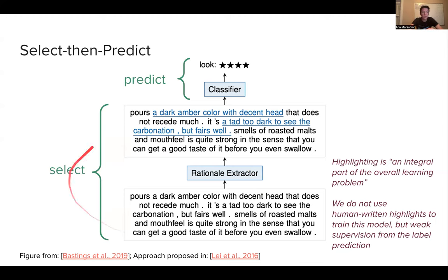So this is different from post hoc highlighting because this rationale extractor here, we are using rationale because that's the terminology which was used in this select and predict papers. But remember I told you it's better to use highlighting. So we could also call this highlight extractor. So highlight extractor is integral part of the whole model. And we are going to train the model to do this. It is not done in a post hoc way like we did with first approach we have seen.